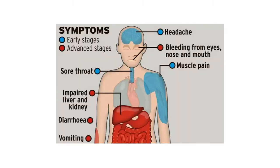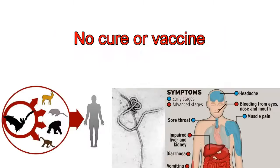The first symptoms are high fever, fatigue, muscle pain, headache, and sore throat. These are then followed by rashes, diarrhea, impaired liver and kidney function, vomiting, and occasional internal and external bleeding. There is currently no cure or vaccine for the disease.